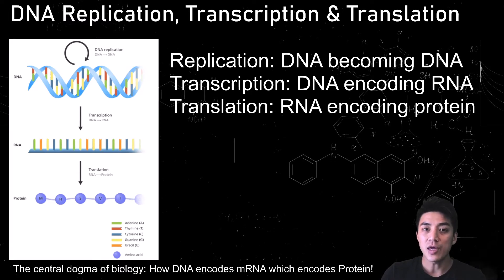Replication is how DNA makes copies of itself. Transcription is how DNA encodes mRNA. And finally you have translation, which is how mRNA encodes proteins. It's a three-step process. We'll watch some videos and do some problems together. And by the end of it all, you'll become an expert in how DNA becomes proteins.